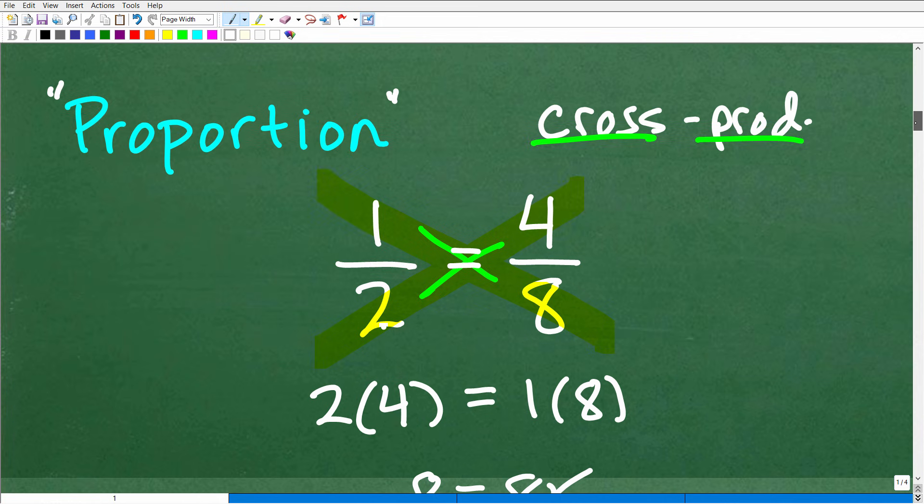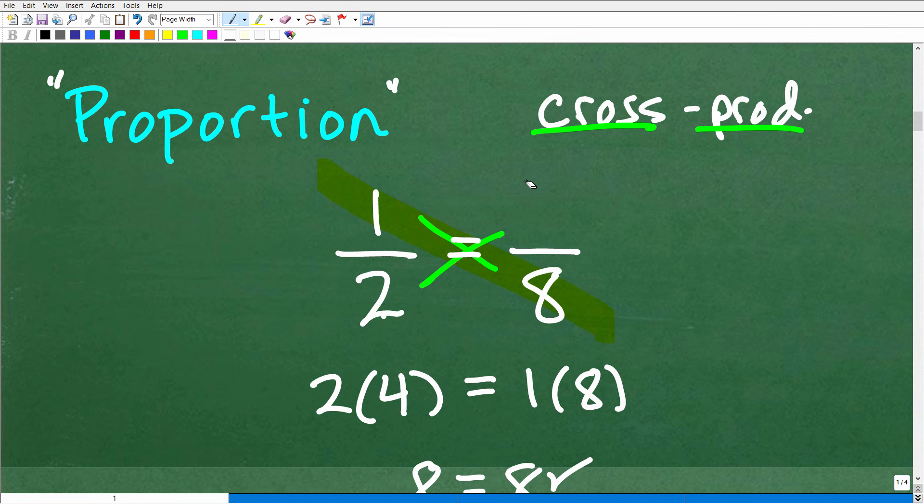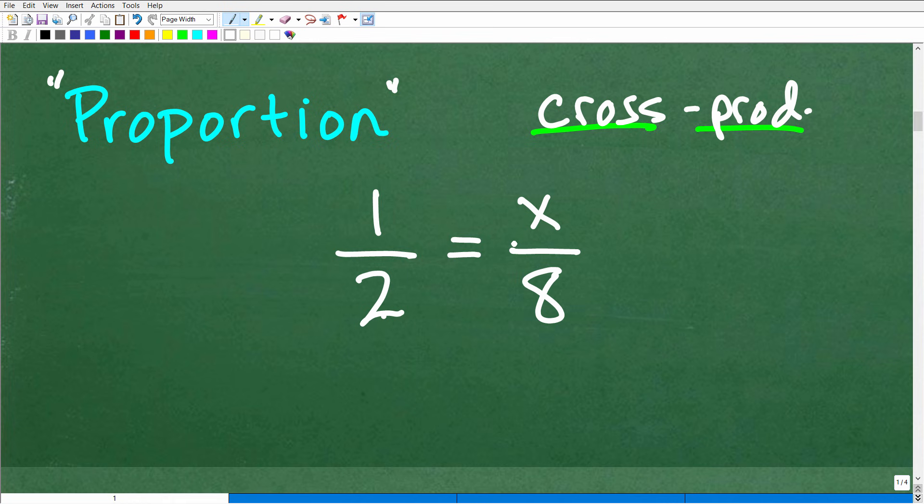So the way we can use the cross product is, let's suppose we have a problem, an algebra problem. I'm going to erase this right here. And let's throw in a variable. So this looks kind of, you know, doesn't look too intimidating. But, you know, you see this, you've got 1 half is equal to x over 8. You can just kind of reason through this and be like, oh, well, if this is 1 half, and what is the numerator here, if this is 8? You could probably just, by common sense, see that the answer is going to be 4. But what you want to do is use the cross product.